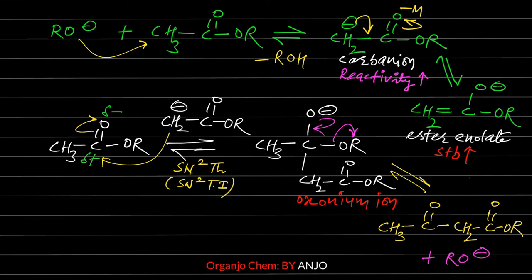The tetrahedral intermediate is unstable. Electrons move such that the leaving group (OR) separates, forming a C=O double bond, giving us the beta-keto ester. The most interesting fact about this mechanism is that all steps are reversible and in equilibrium. There is no single step that acts as a driving force for the final product formation.